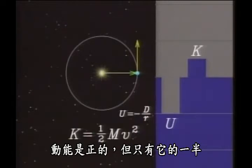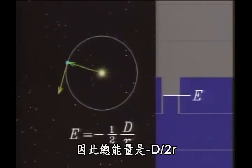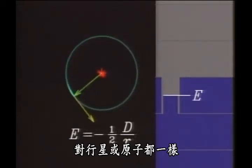And the kinetic energy is positive, but half as big. So the total energy is minus one-half D over r, whether for a planet or for an atom.